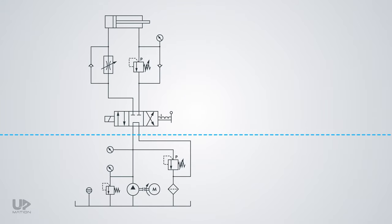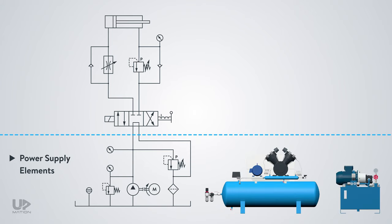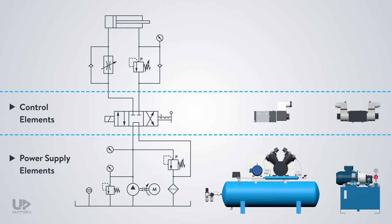Every hydraulic and pneumatic power system consists of these sections. Energy supply or power supply elements, like a hydraulic service unit or a compressor and so on. And of course, power or drive elements that execute the commands, like cylinders, hydraulic motors, etc. Let's move on to the main subject of this video.